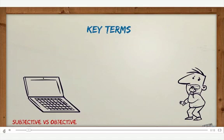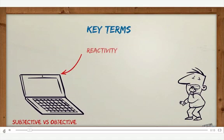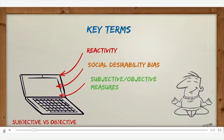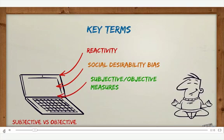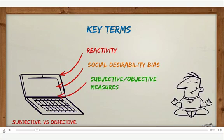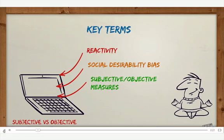The first thing we need to look at is a couple of key terms: reactivity, social desirability bias, and then the range of subjective and objective measures.